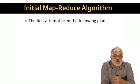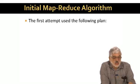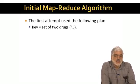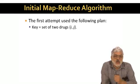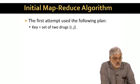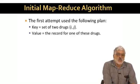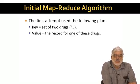Okay, here's what, in a sense, is the obvious way to do the comparisons using MapReduce. We'll have a key for each pair of drugs i and j. You can think of the set as a sorted list, it's the same thing really. And the value will be the megabyte long record for one of these two drugs.